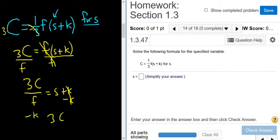So you're left with 3C over F. Okay, so it's all of this. It's all of this, which we've written down here, and then minus k.